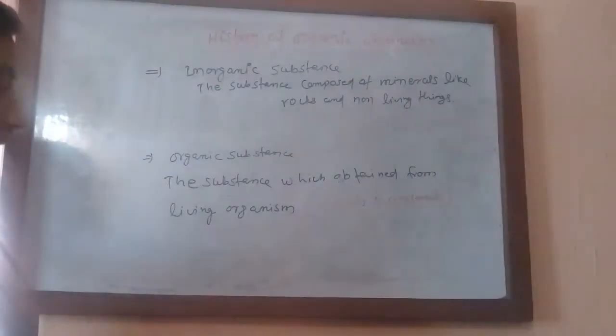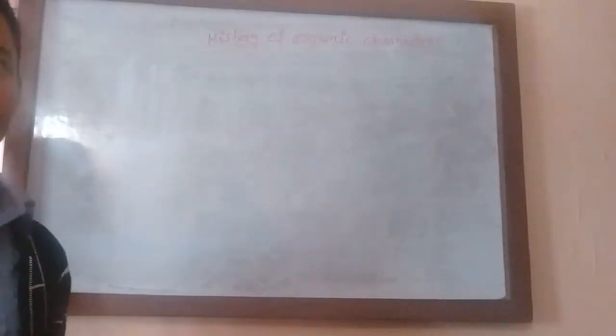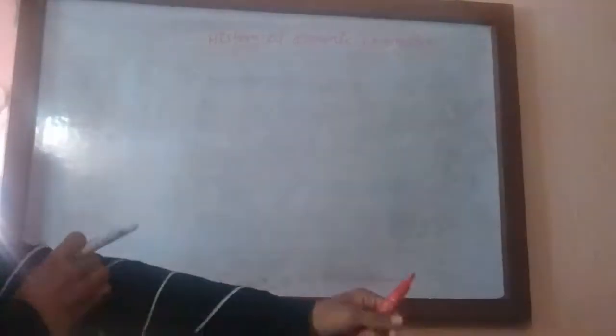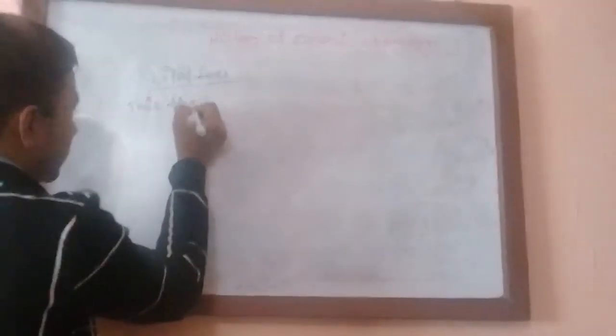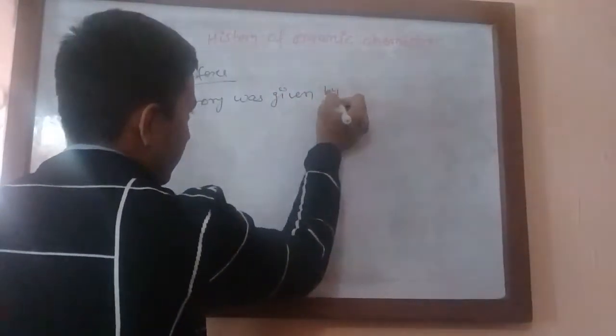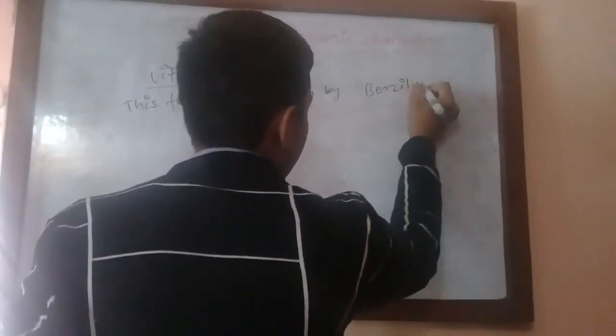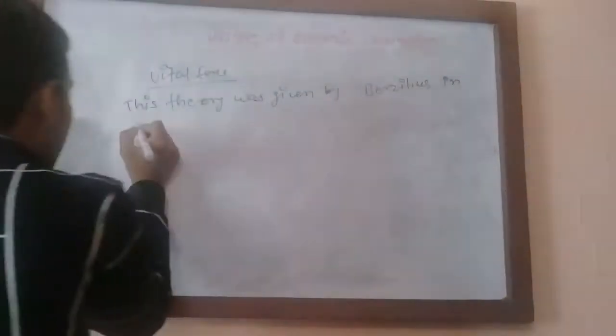This is the story of organic chemistry. Now let's talk about vital force theory — what is the main point and what is the limitation of vital force theory, and why vital force theory was kicked out. This theory was given by Berzelius in 1815.